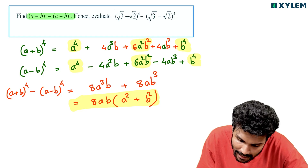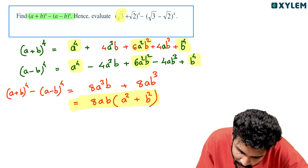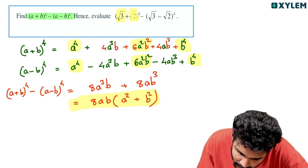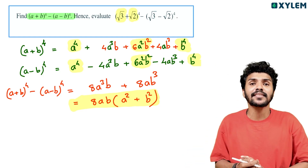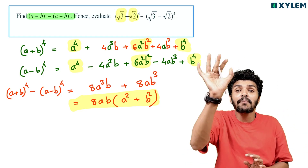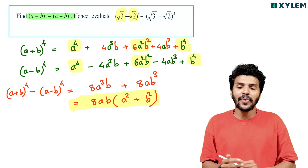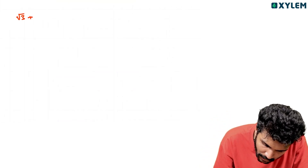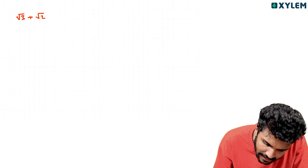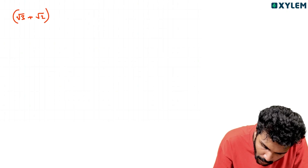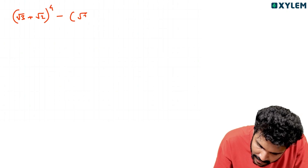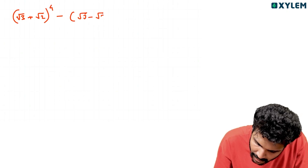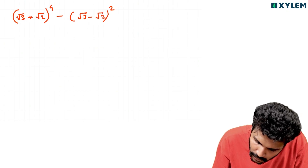Now, substituting: (root 3 plus root 2) whole raised to 4 minus (root 3 minus root 2) whole raised to 4. Here a equals root 3 and b equals root 2.